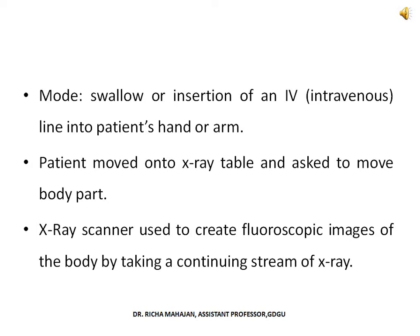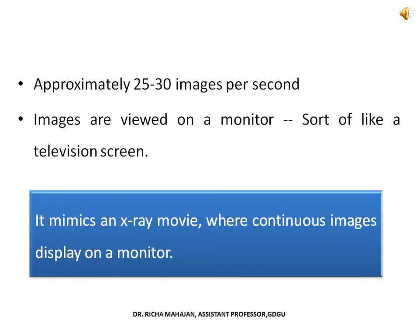An x-ray scanner is then used to create fluoroscopic images of the body by taking a continuous stream of x-rays. Approximately 25 to 30 images are taken per second, and these images can be viewed on a monitor, similar to a television screen. Therefore, the whole procedure mimics an x-ray movie where continuous images display on a monitor.